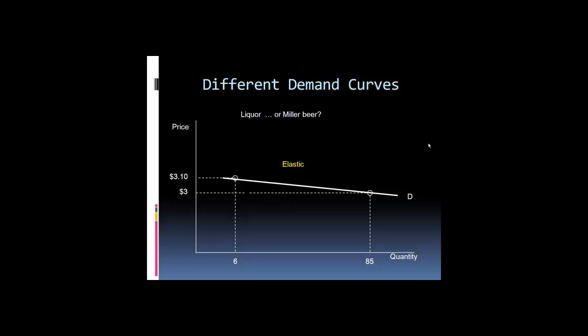Let's take a quick look here. Look at this demand curve and note that when the price falls from $3.10 down to $3, people dramatically increase their purchases. So this is a fairly elastic demand curve. Do you suppose this reflects the demand for liquor, overall all liquor, or just for Miller beer? Suppose the price goes from $3 to $3.10, and as a result, sales drop from 85 down to 6 units. Are we describing the behavior of liquor or beer? Miller beer. The answer is Miller beer because if the price of Miller beer goes up, how many substitutes are there for that? Quite a few. But if the price of all liquor goes up, there's not a whole lot of substitutes available.